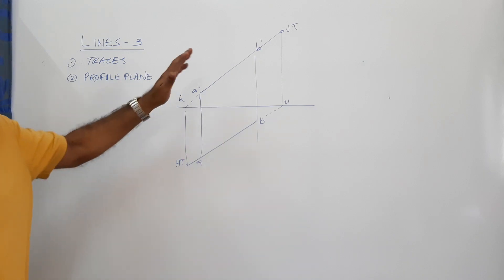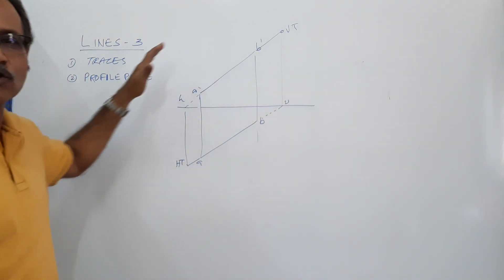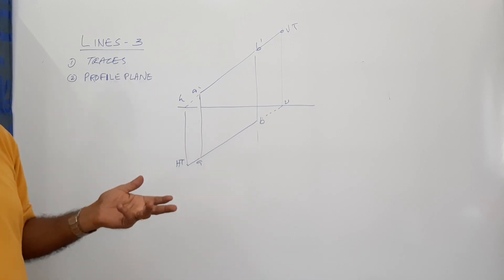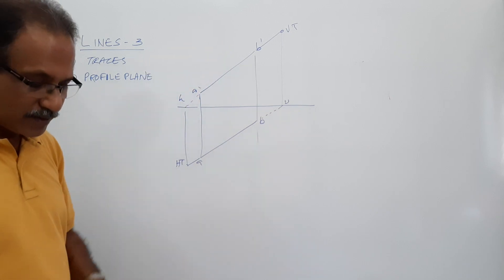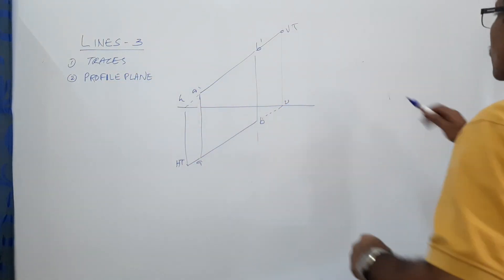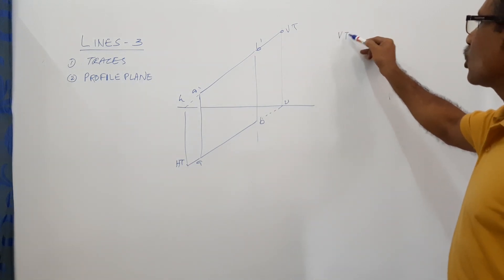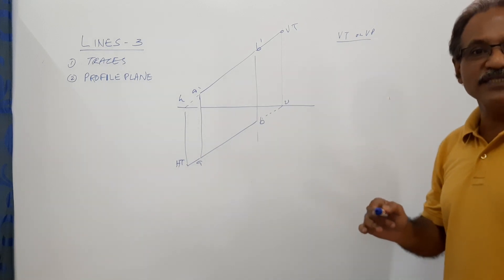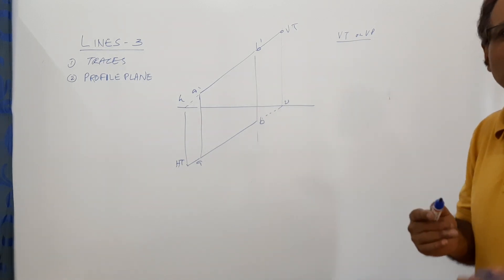I have deliberately taken this orientation so that I get one trace on one side and the other trace on the other side. It need not always be like that — a line can have any orientation. Now, VT is always a point which lies on VP. How do you describe where VT is?